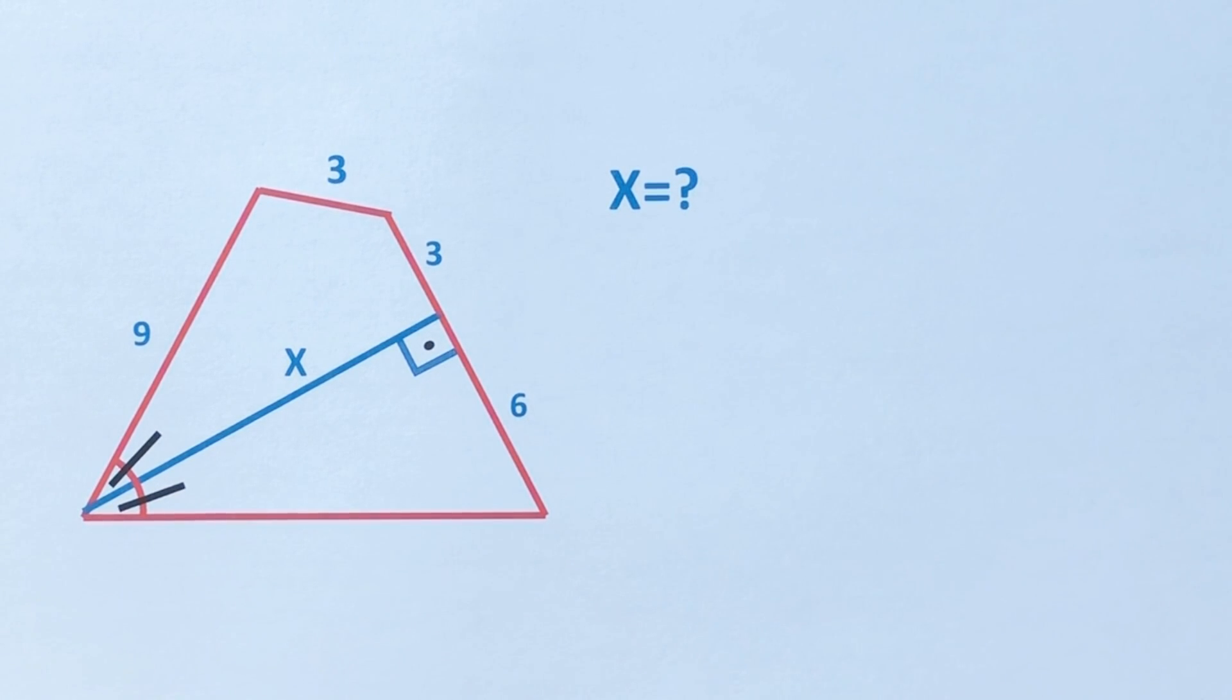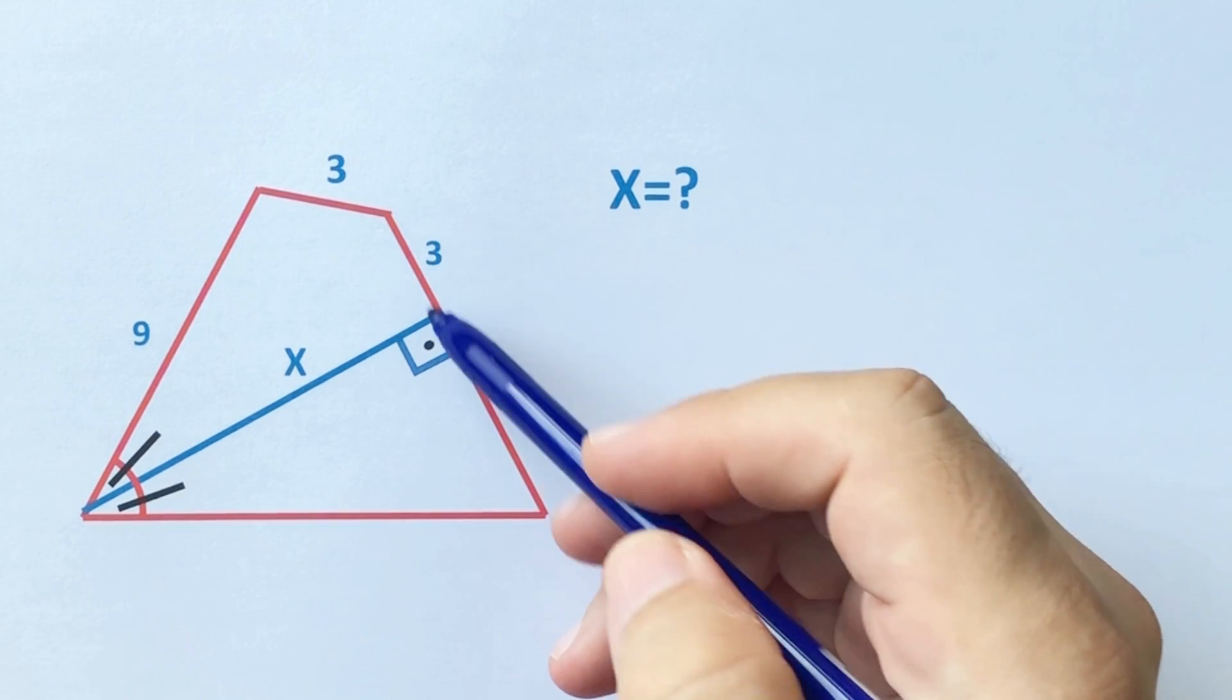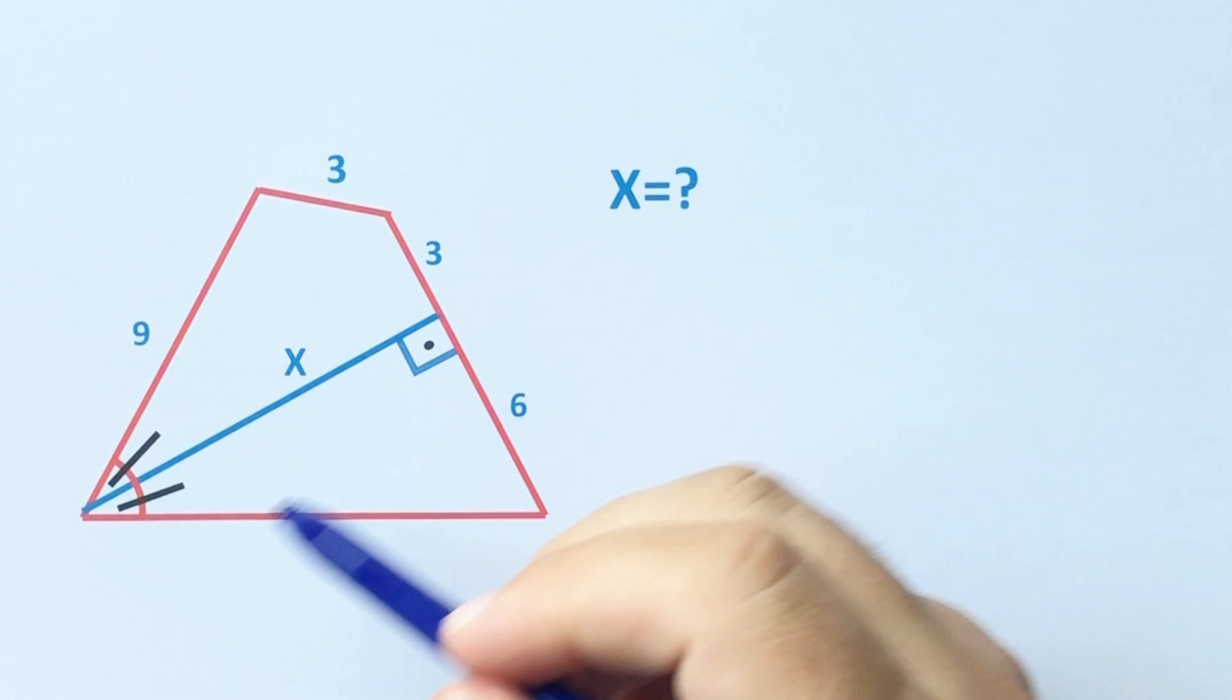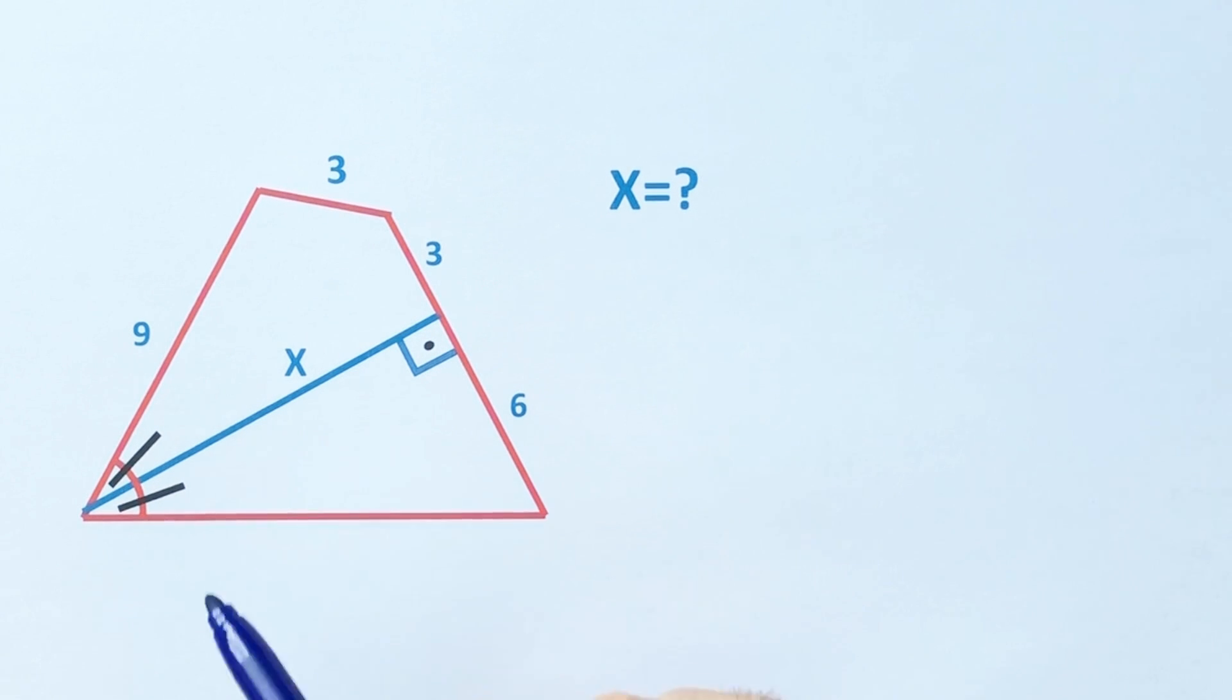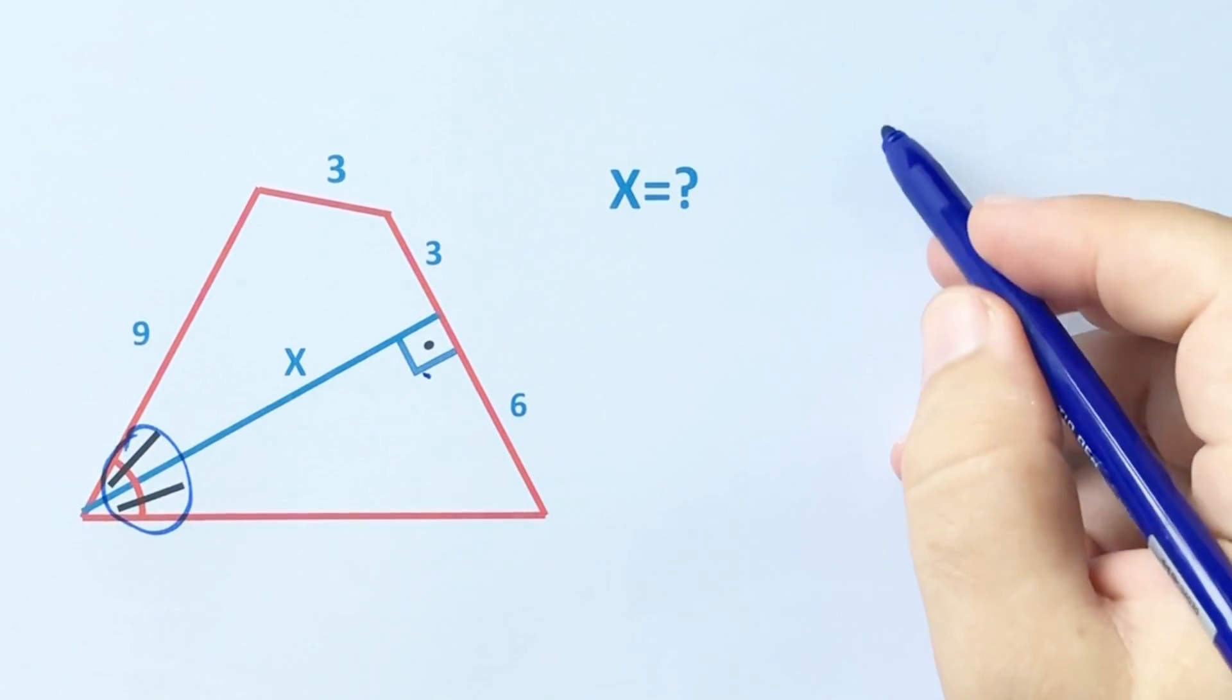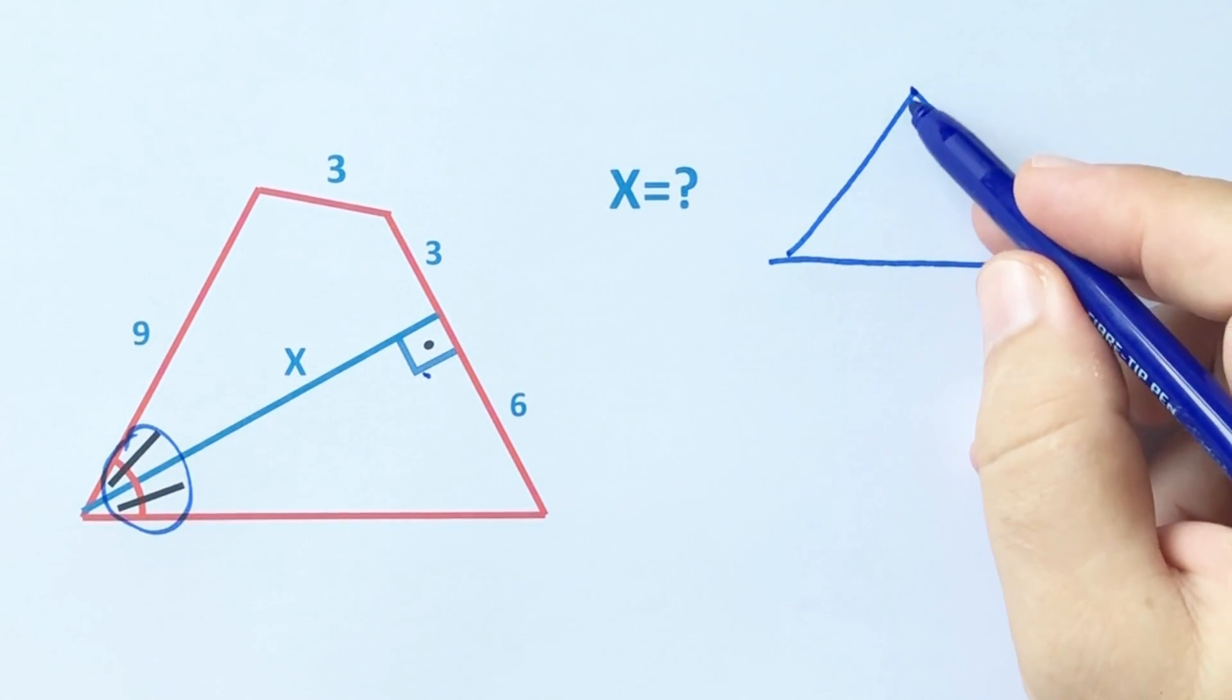Hello everyone, in this video we have one quadrilateral. Here is 9, these are 3, here is 6, here is 90 degrees, and we have a bisector line. X is asked. First of all, notice that we have a bisector and here is 90 degrees.